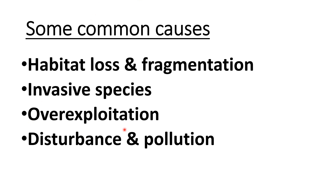Over-exploitation - jisme sabse zyada role humans ka hai. Particular species ka over-exploitation ho raha hai just for personal use, and the ultimate result is that the population becomes vulnerable to extinction. A classic example is African elephants - over-hunting ki jaati hai because their teeth are used for trading purposes. Elephant population have been declining in most areas, especially in Africa. Lions aur tigers ka bhi shikar kiya jaata tha - hunting ki jaati thi - which was a very common practice in previous years.